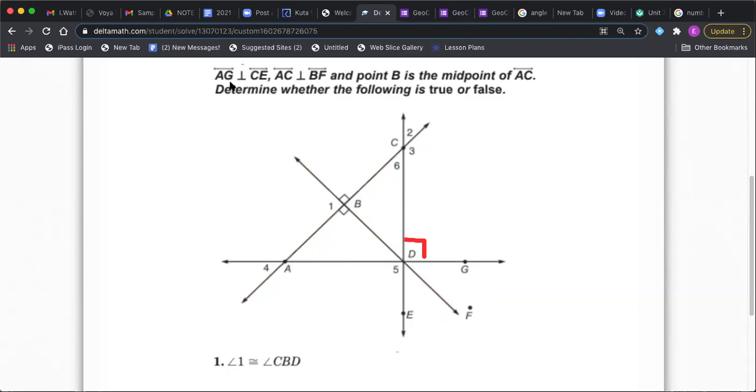And then it also tells me that point B is the midpoint of AC. Determine whether the following is true or false. So let's take a look at what they're asking me right here. Is angle one congruent to angle CBD? Let's see. Here's angle one. Angle CBD, well that's this one here. Is that true or is that false? With those two angles that I just marked, are those actually equal to each other?